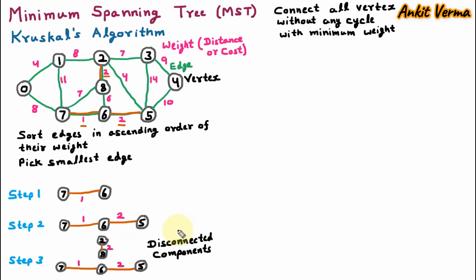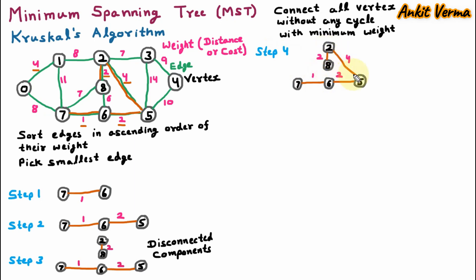There is one more algorithm for minimum spanning tree called Prim's algorithm. In Prim's algorithm we never have disconnected components. Moving forward with Kruskal's algorithm: in step 4 we find the next minimum edge with weight 4, which is between vertices 2 and 5, and also between vertices 0 and 1 — we can pick any. I am picking the edge between 2 and 5, so in step 4 one more edge is added.